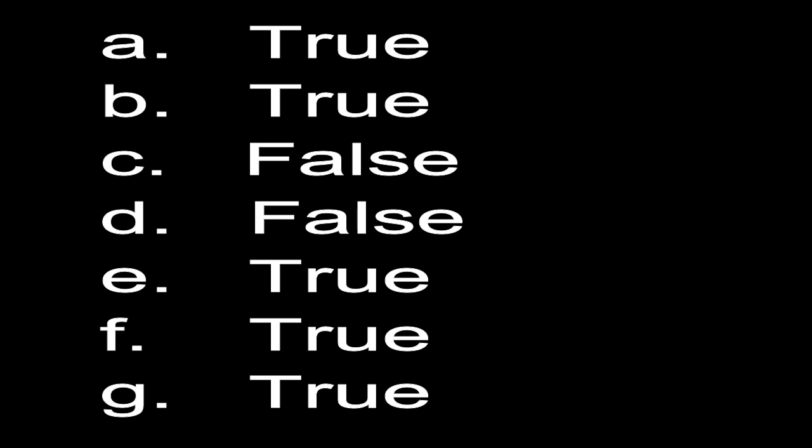Number C: you can create a hyperlink in MS Word — the book says cannot, so this answer is false. Number D: creating a recipient list is the last step in Mail Merge — this answer is also false.